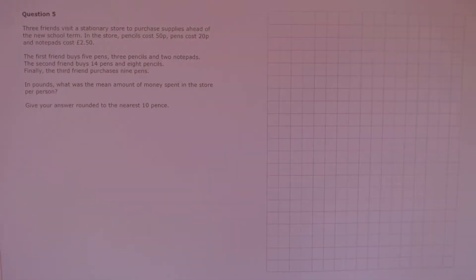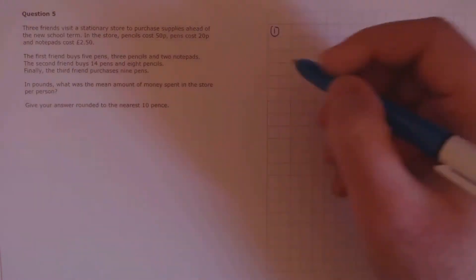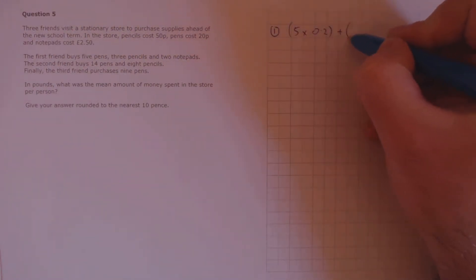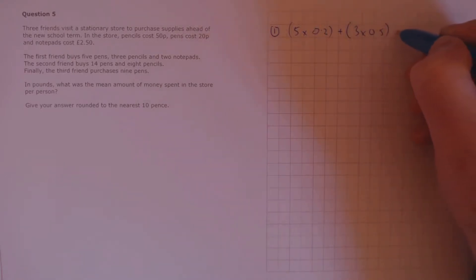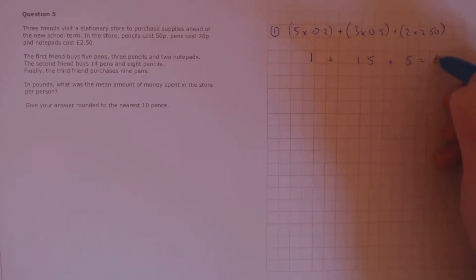Question 5. Three friends visit a stationery store to purchase supplies ahead of the new school term. Pencils cost 50p, pens cost 20p, and notepads cost £2.50. The first friend buys 5 pens, 3 pencils, and 2 notepads. The second friend buys 14 pens and 8 pencils, and the third friend purchases 9 pens. In pounds, what was the mean amount of money spent per person? The first friend purchases 5 pens, so that's 5 times £0.20, 3 pencils at 3 times £0.50, and 2 notepads at 2 times £2.50. That's £1 plus £1.50 plus £5, which is £7.50.